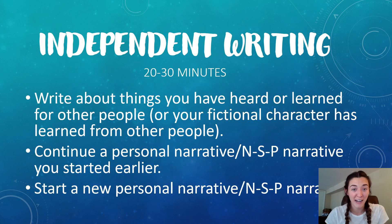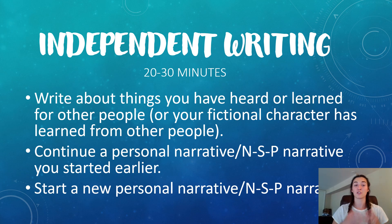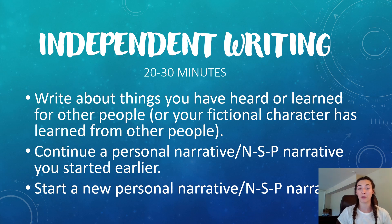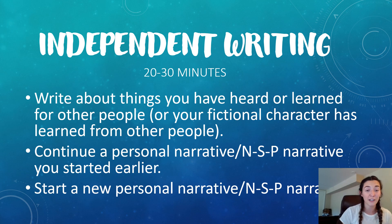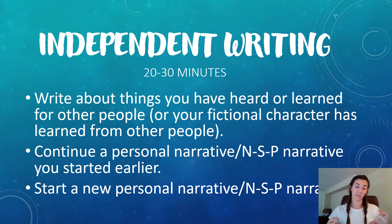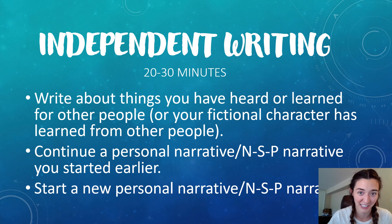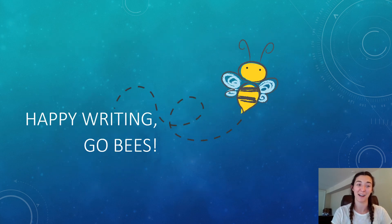Now it's time for independent writing. You've worked so hard — I'm so proud of you. You get 20 to 30 minutes to write. You can write about things you've heard or learned from other people, or that a fictional character has heard or learned. You can continue a personal narrative or a not-so-personal narrative, or start a new one. It's whatever you want to do that's related to narrative writing. Thanks for hanging in there in this tricky lesson. Happy writing — Go Bees!